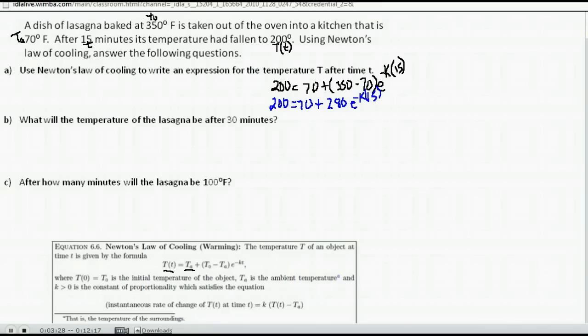Now, I'm trying to solve for K, so I need to isolate whatever this exponential part here, e to the negative K times 15. So to do that, I'm moving everything else to the other side. I'm going to subtract 70. And I get 130 is equal to 280 e to the negative K times 15. I still don't have it isolated because it's being multiplied by 280. So I'm going to divide both sides by 280.